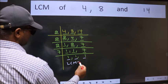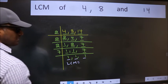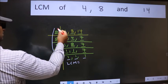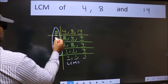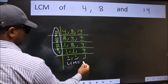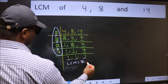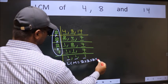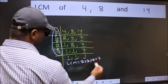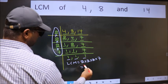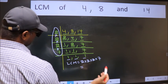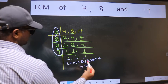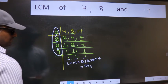So our LCM is the product of these numbers, that is 2×2×2×2×7. When we multiply these numbers, we get 56 as our LCM. Let's see you in the next video.